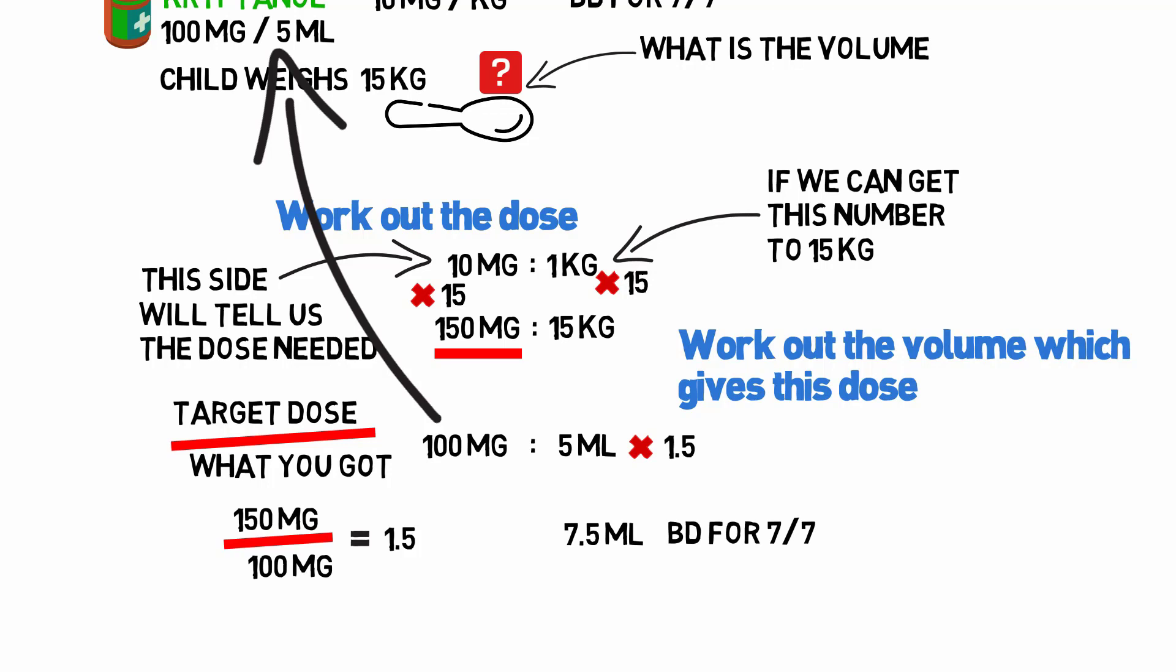So to give 150 milligrams of cryptonol, you give seven and a half mils BD for seven days.